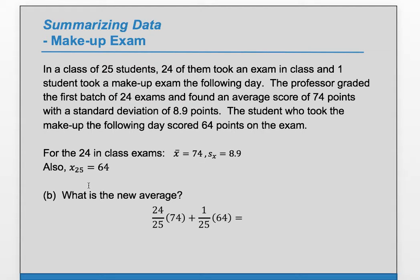So, out of the 25 total students now, 24 out of the 25 of them together combined had an average of 74. One student out of the 25 had a score of 64. So basically, we're going to weight the 74 by 24/25, and we're going to weight the 64 by 1/25. Notice that the two weights have to add up to one.